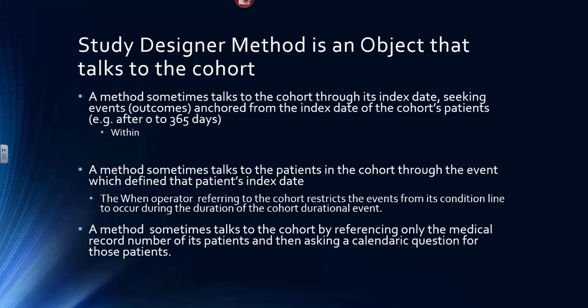A method sometimes talks to the cohort by referencing only the medical record number and then asking a calendaric question for those patients. Does this patient have an echo in the year 2014? All it cares about is the patient's MRN and looking for the presence of an echo in 2014.